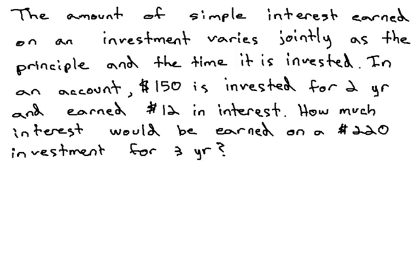To start this problem off, our first step is to identify the type of variation and make a formula. We are told it varies jointly. This means we will divide the first variable by the product of the other two. We're looking for the amount of simple interest, we'll call that I, and it varies as the principal or starting investment P, and T the time it is invested.